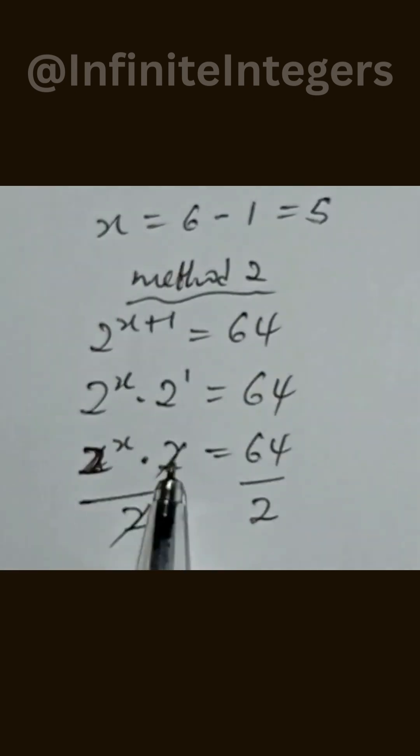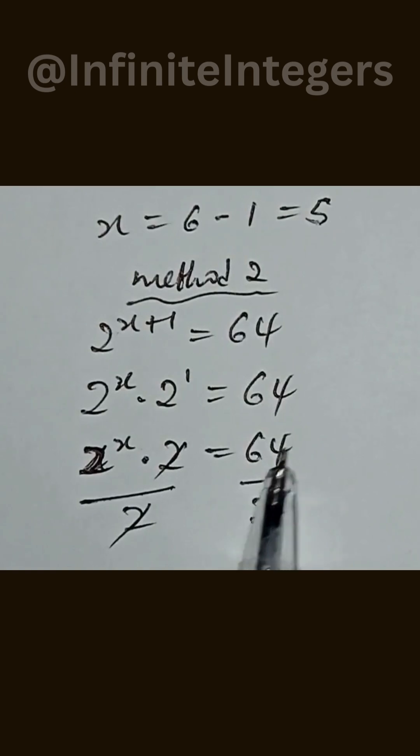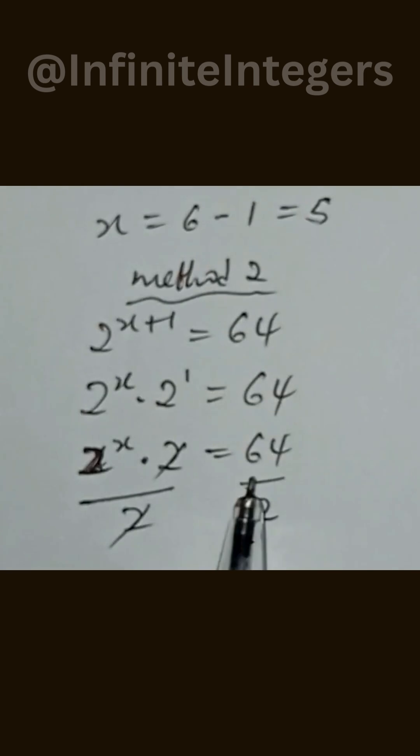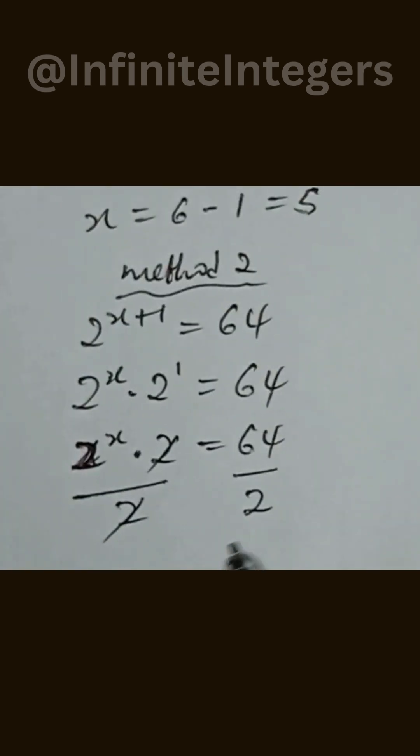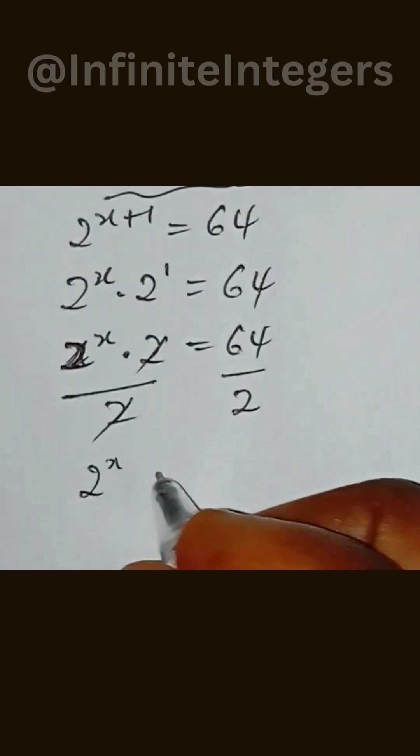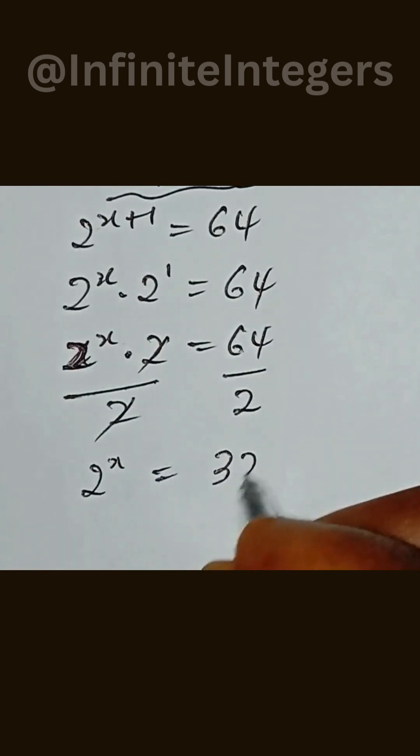2 to the power of x multiplied by 2, divide by 2, 64 divide by 2. And 64 divide by 2 will be given as 2 to the power of x equal to 32.